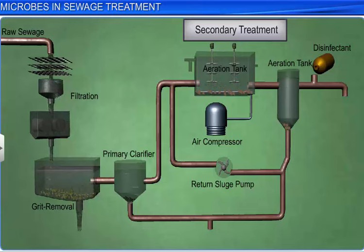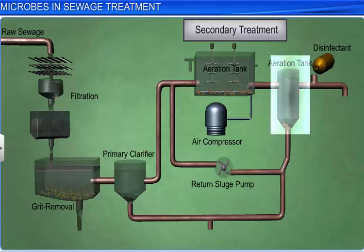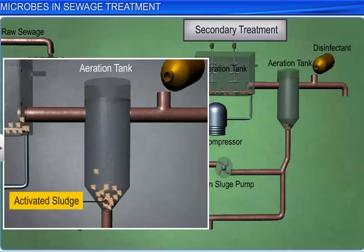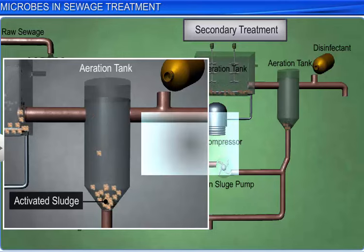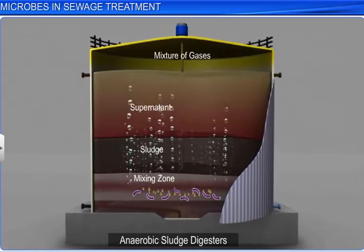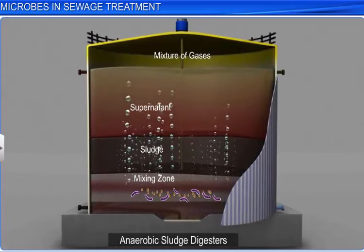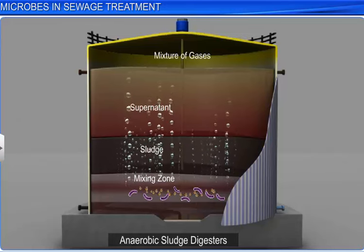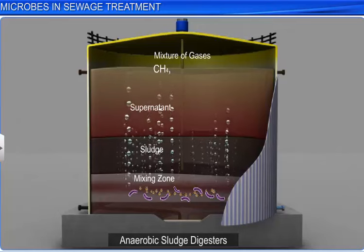Once this is accomplished, the effluents are transferred to another aeration tank where the flocs of bacteria are gradually allowed to sediment. This sedimented part of sewage is known as activated sludge, which is pumped into large tanks called anaerobic sludge digesters. Here, anaerobic bacteria digest the bacteria and fungi present in the activated sludge and produce a mixture of gases such as methane, hydrogen sulfide, and carbon dioxide.